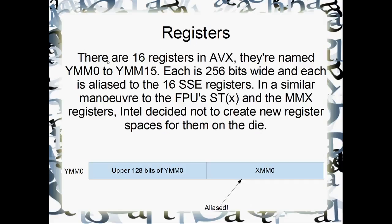The registers themselves: there are 16 registers in AVX, named YMM0 through to YMM15. Each of them is 256 bits wide, and each of them is aliased to the 16 SSE registers - XMM0 through to XMM15 - which are actually the lower 128 bits of the AVX registers.